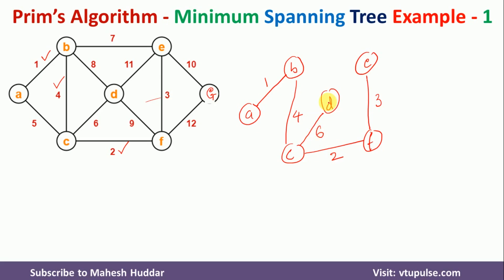Now from all these nodes, we have to find the neighbors. If you cross-check carefully, the neighbor E to G has the smallest eligible weight. I cannot select B to E because it would form a cycle. I cannot select B to D — it would also form a cycle. And F to D would form a cycle as well. The next smallest is E to G with weight 10, so I will select this and draw the node G with the weight 10.